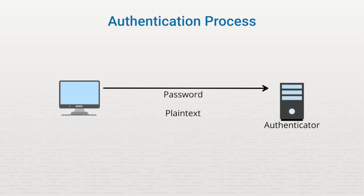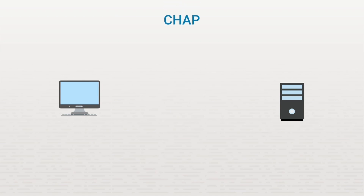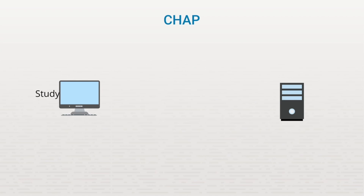Luckily, there are now various authentication protocols that strengthen the authentication process. The first protocol we'll look at is CHAP, or Challenge Handshake Authentication Protocol. CHAP uses what's called a shared secret that's pre-configured on both devices for authentication. Both devices would need to be configured with a shared secret or password, and the authentication device associates this shared secret with a username. When a device sends a communication request, CHAP uses a method called a challenge-response mechanism.